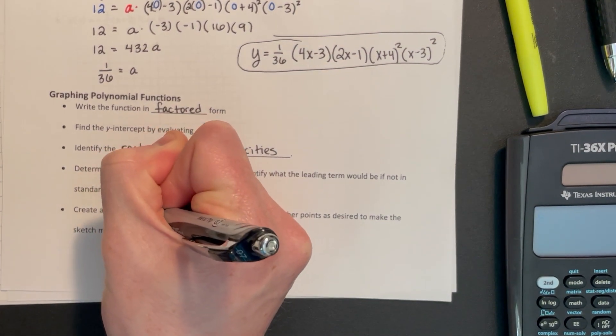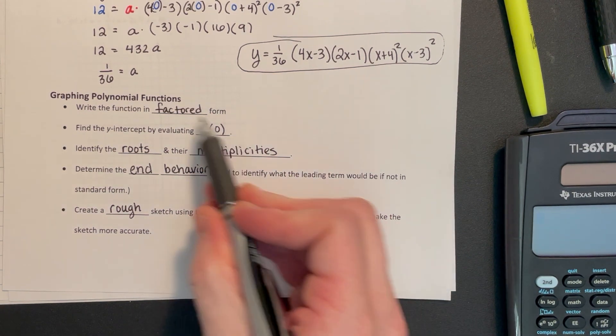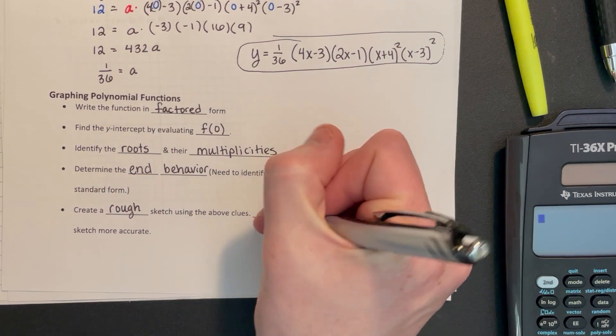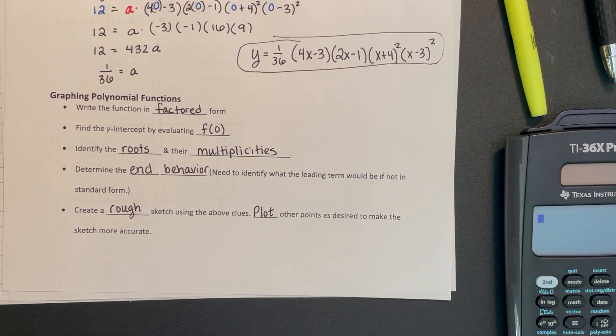Then we can make a rough sketch. This is not going to be a perfect sketch but it will use the clues and give us a general idea of the shape. We can also plot other points as necessary to make it more accurate.